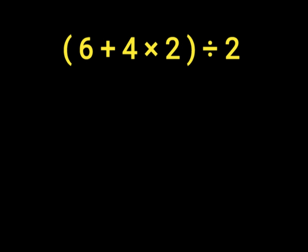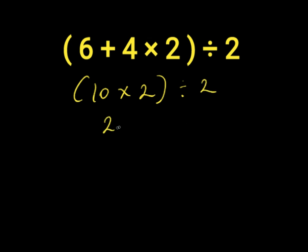We first solve our parentheses, which is 6 plus 4 times 2. We add 6 plus 4 to get 10, then 10 times 2 divided by 2. 10 times 2 gives us 20, and 20 divided by 2 is 10. However, 10 is the wrong answer because we did not follow the order of operations, which is PEMDAS.